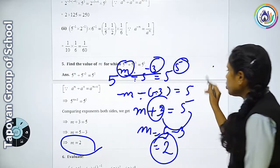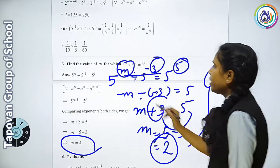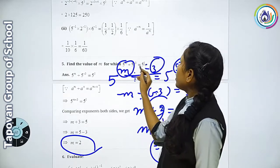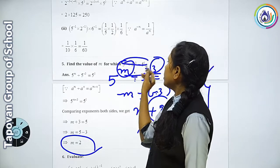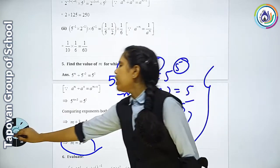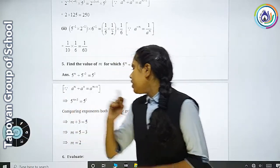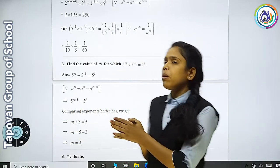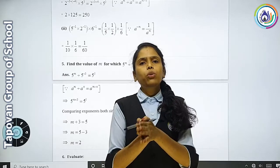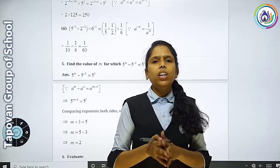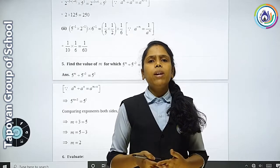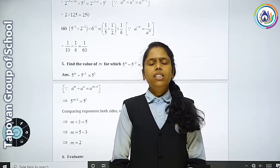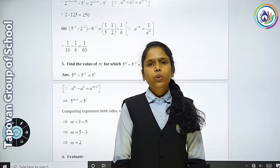To is tarah se hum ne solve kiya hai. Hum ne sirf upar ke numbers ko consider kiya hai — jo power hai, usse consider kiya hai. To yahan aapka question number 1 to 5 complete hua. Next video mein aage ke sums karayenge 6 se. Thank you.